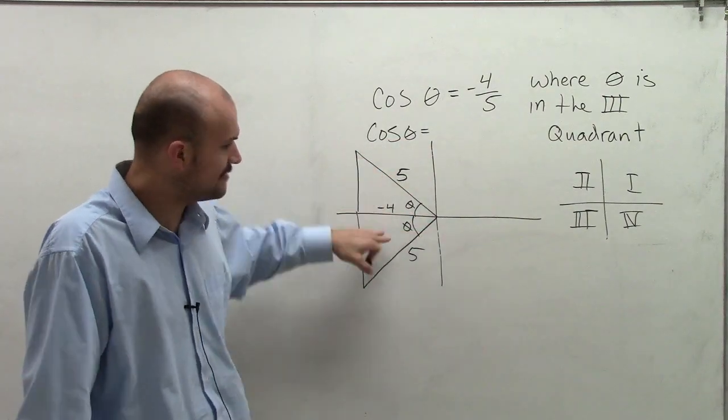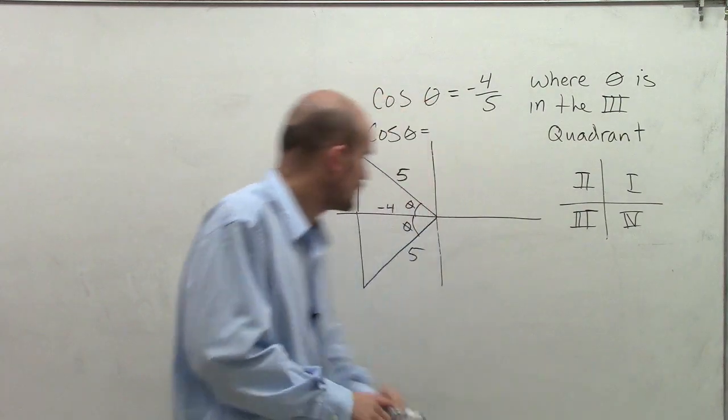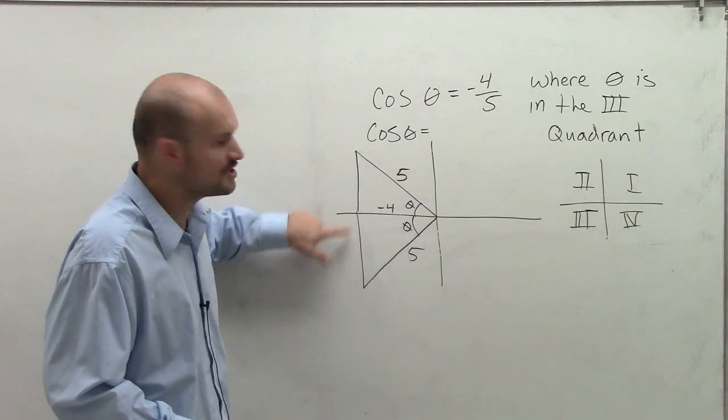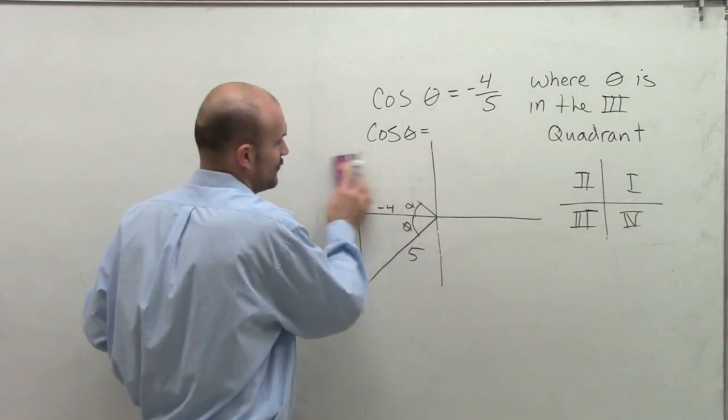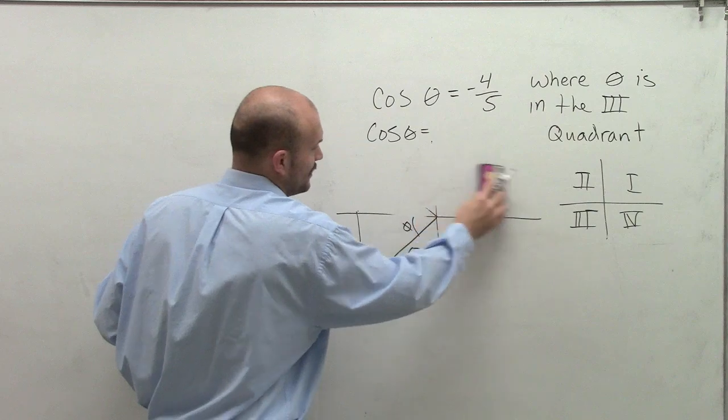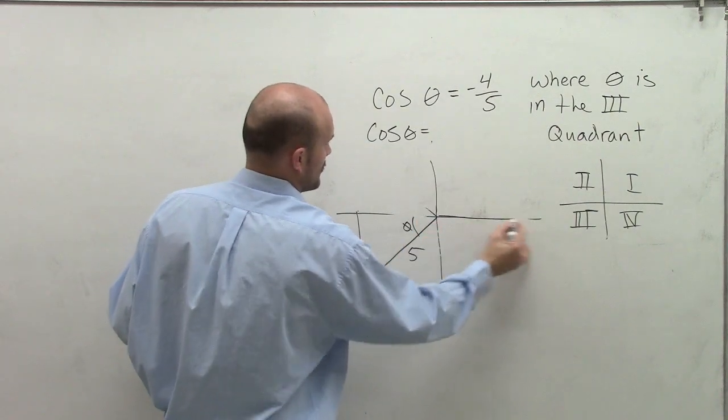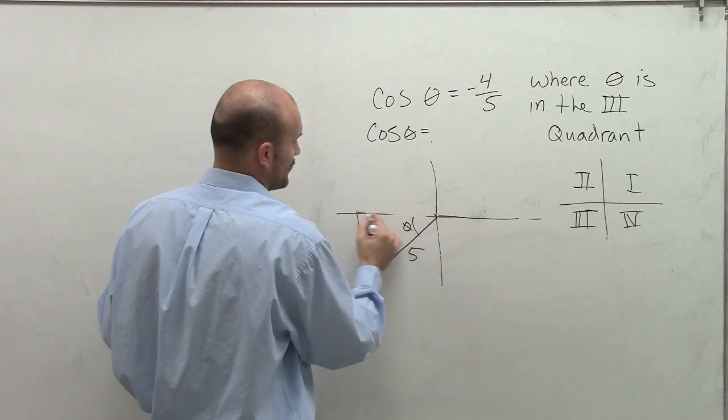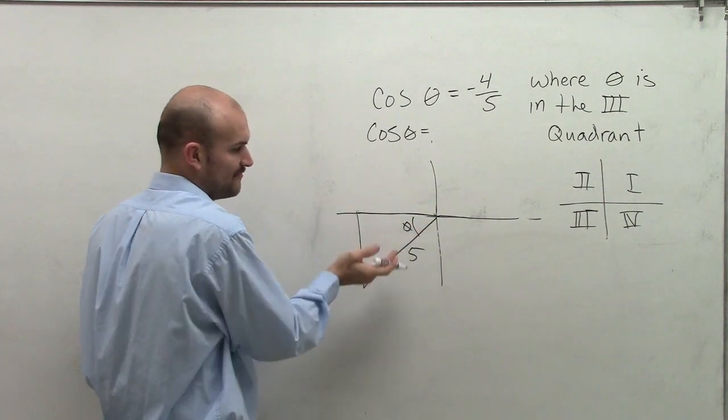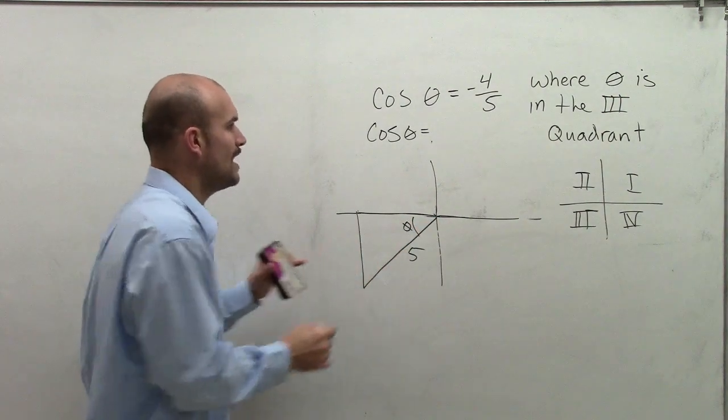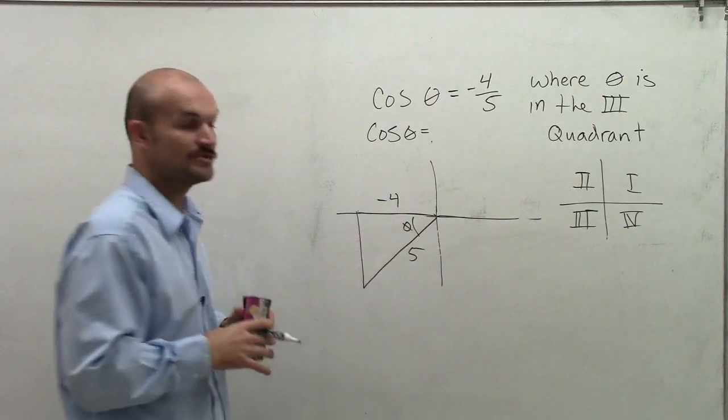Well, now what we notice is in the third quadrant, my sine value is going to be negative. So I'm going to erase this top triangle and realize that the only triangle we're going to be dealing with is going to be one where it's facing down. So therefore, whatever my y value is, I now know is going to be negative.